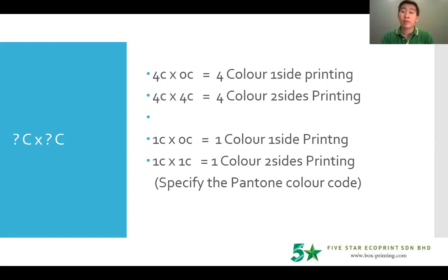1C x 0C means one color one side. 1C x 1C is one color both sides. For 1C, normally we assume that it's black color. If it involves Pantone color, do put the Pantone code next to it so that it avoids future argument, because if it involves Pantone color, the pricing will be significantly different.